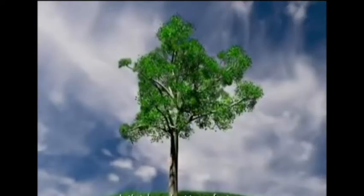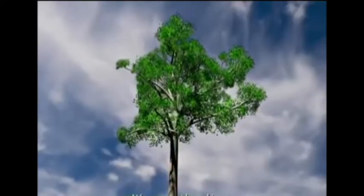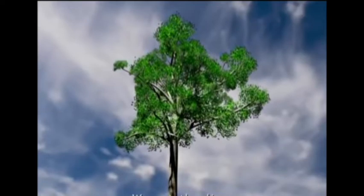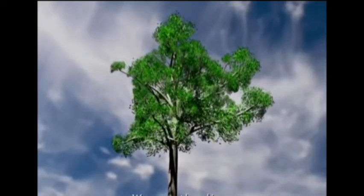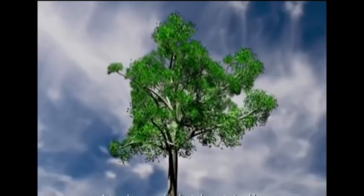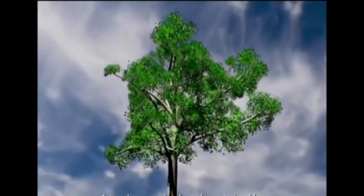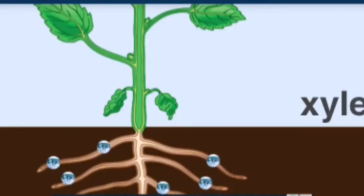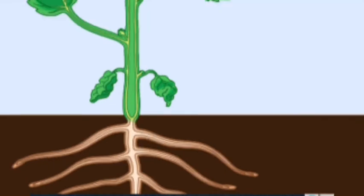We are discussing transportation. Transportation means taking things from one place to another. What things need to be transported by a plant? A plant needs to transport water from root to leaf because the leaf is the site where food is made.